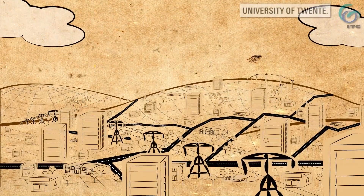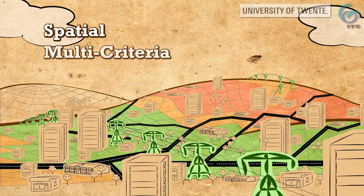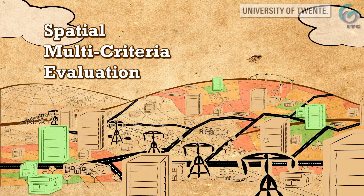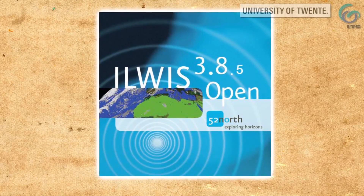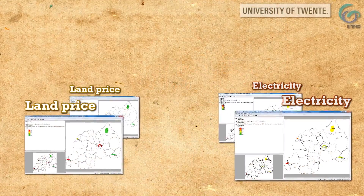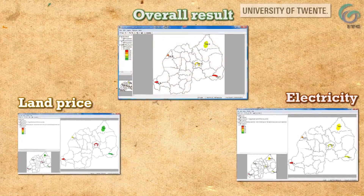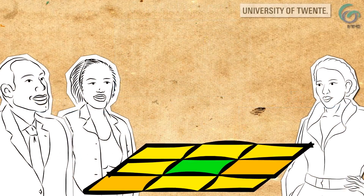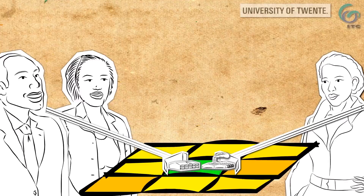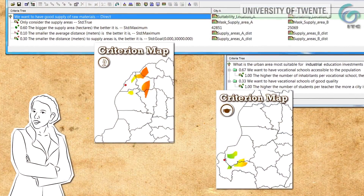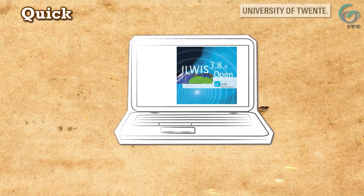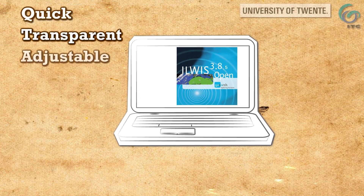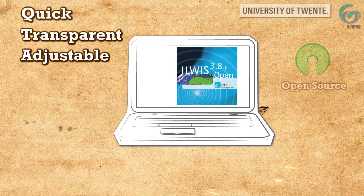What we have just shown you is called spatial multi-criteria evaluation. We have developed special software for it in the ILWIS software package. With this software, you can identify suitable locations, address spatial conflicts, and choose between spatial plans. It makes your analysis quick, transparent, and you can change it on the fly. It is open source software and freely available at this website.